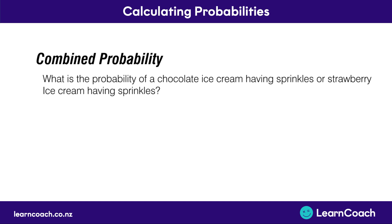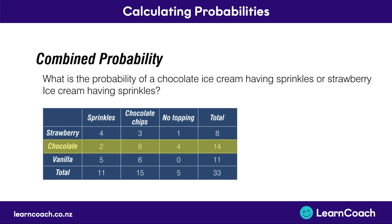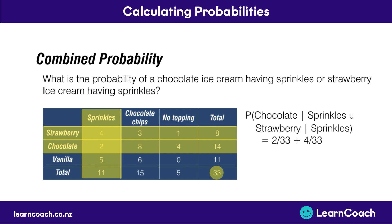For another example: what is the probability of a chocolate ice cream having sprinkles or a strawberry ice cream having sprinkles? Looking at our table, we look at the number of chocolate ice creams that had sprinkles, as well as the strawberry ice creams that also had sprinkles, compared to the total number of ice creams. We divide 2 by 33 for the chocolate sprinkles and 4 by 33 for the strawberry sprinkles, giving us a combined probability of 0.181.